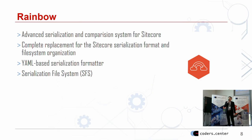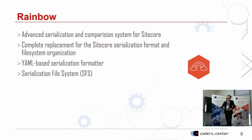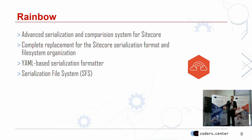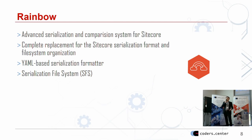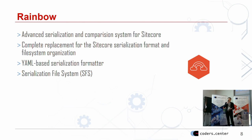One of the elements of Unicorn is Rainbow. It's a system which completely replaces the default serialization system inside Sitecore's core. It adds a new serialization format and file system organization. The files are now in a YAML-based serialization format and they are stored in something like SFS — the Serialization File System. This is very advanced stuff that adds a lot of features over the default one.